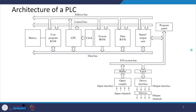This is the architecture of a PLC. Basically you have the input channel and the output channel, an input-output bus system, program panels, a power supply, RAM, CPU, clock, system ROM, data RAM, the input-output unit, and you have the address bus as well as the control bus.